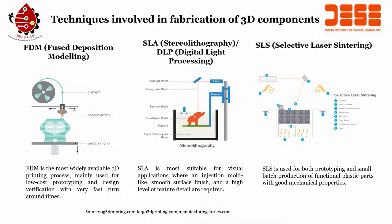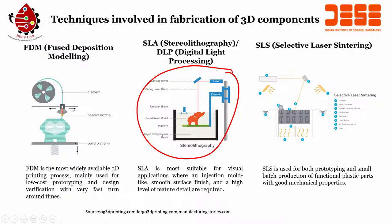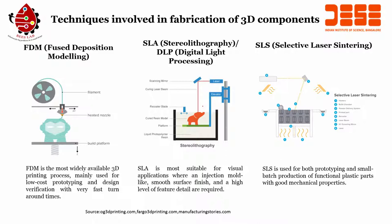The next technique is SLA, which stands for stereolithography, or DLP, which is digital light processing. In this process, you have a liquid photopolymer resin, a platform, and then the cured resin model. You have a recoater blade, a laser, elevator, scanning mirror, and curing laser beam. Together, using all these components, the system can print the complete setup. The advantage of SLA is that it is more suitable for visual applications where an injection mold-like smooth surface finish and a high level of feature details are required. When you want an extremely smooth finish that looks like an injection-molded part, SLA is better than FDM.